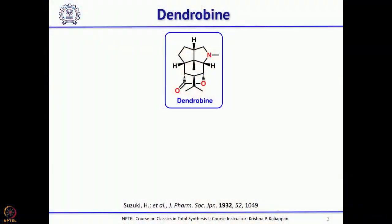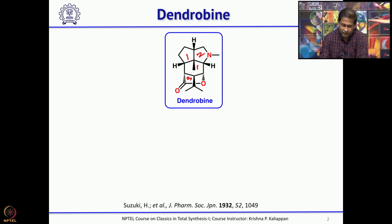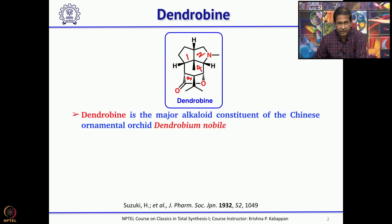Good morning, welcome back to NPTEL course on classics in total synthesis part 1. We have been talking about total synthesis of alkaloids. We will continue our discussion on one more alkaloid today - dendrobine - a very interesting tetracyclic compound. There are three 5-membered rings: the third one is a lactone, the second is a substituted pyrrolidine ring, and the fourth is a 6-membered ring. This molecule was isolated way back in 1932, almost 90 years ago, as a major alkaloid constituent of the Chinese ornamental orchid called Dendrobium nobile.